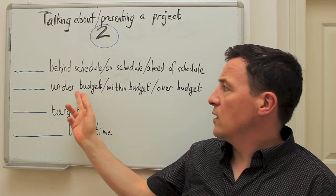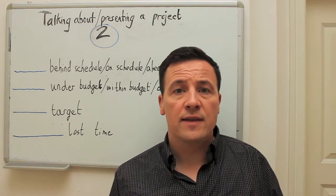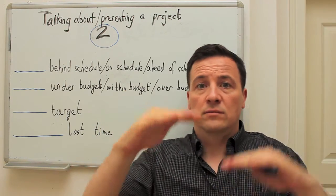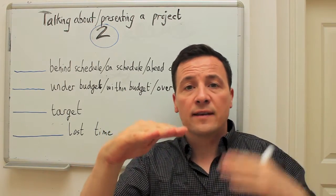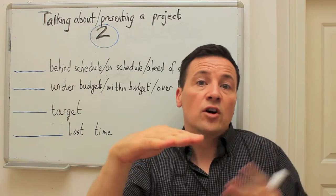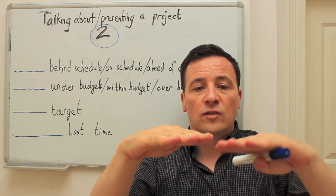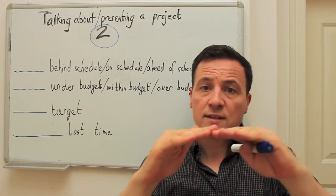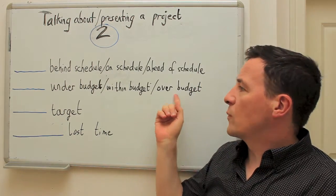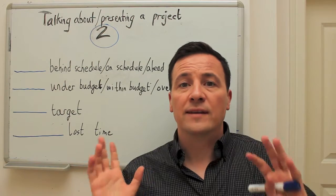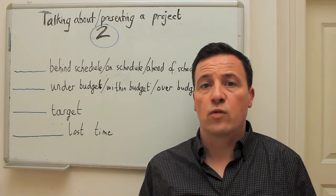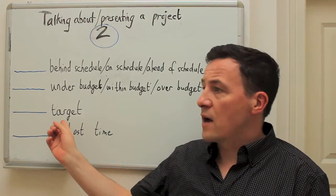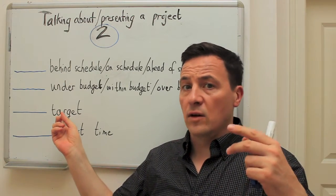You could be under budget, meaning that you're saving money, or you could be within budget. In the example from the last video the budget was a hundred thousand euros, so you're within budget if you haven't reached that. Over budget means you're spending too much money or the budget is too small.